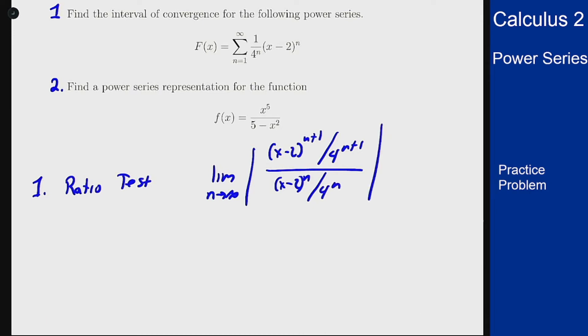I can cancel things out here. This becomes the limit as n goes to infinity of the absolute value of (x-2)/4, because the (n+1) and n cancel to put one factor on top, and the (n+1) and n cancel to get one factor of 4 on the bottom. So this limit is just (x-2)/4.